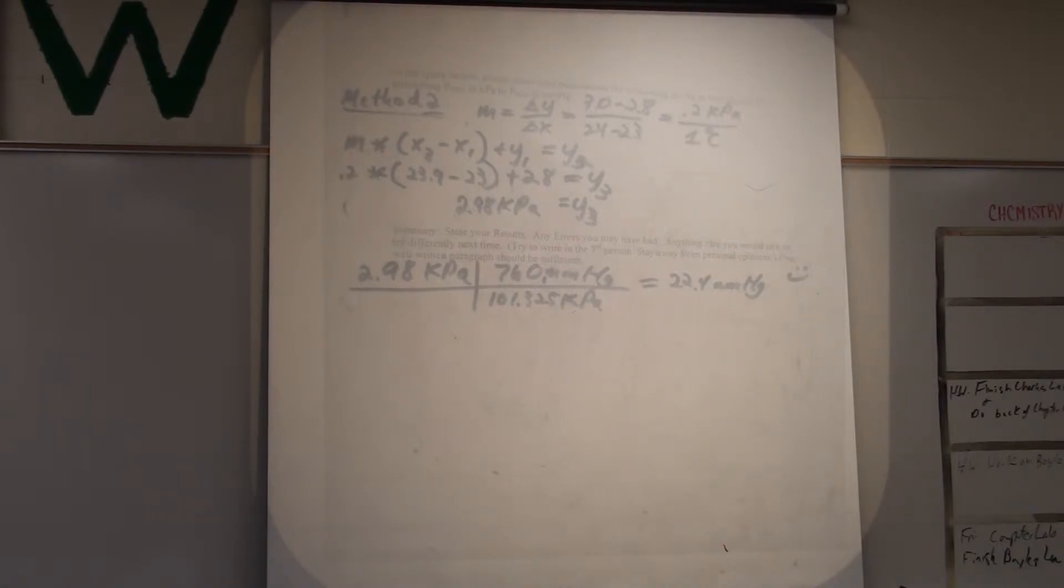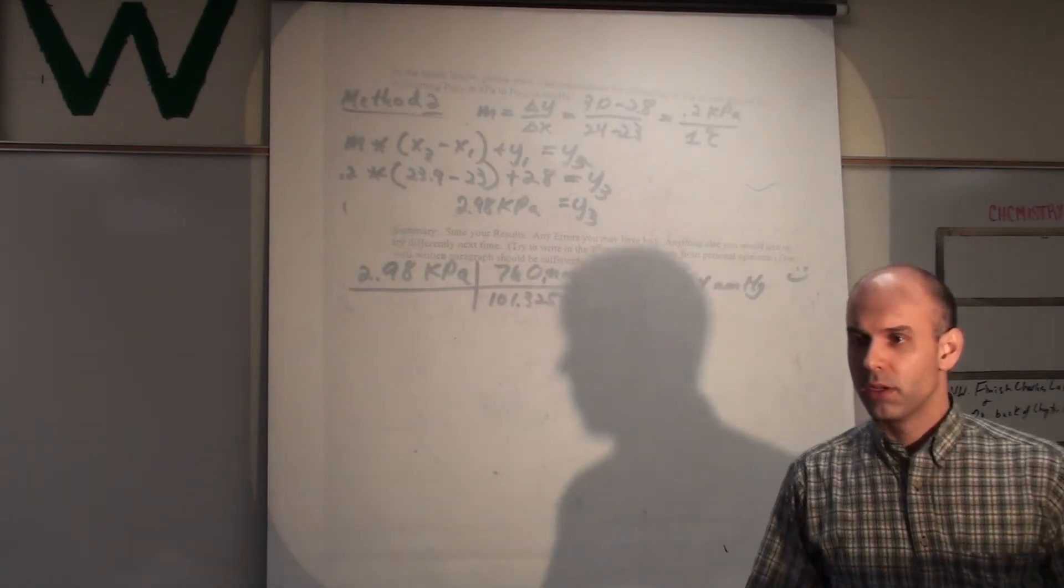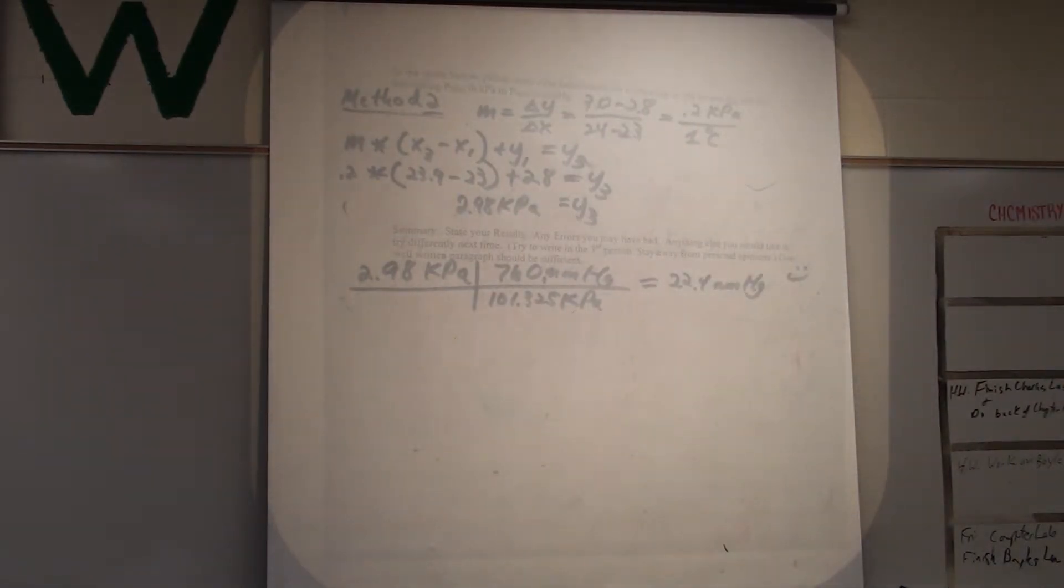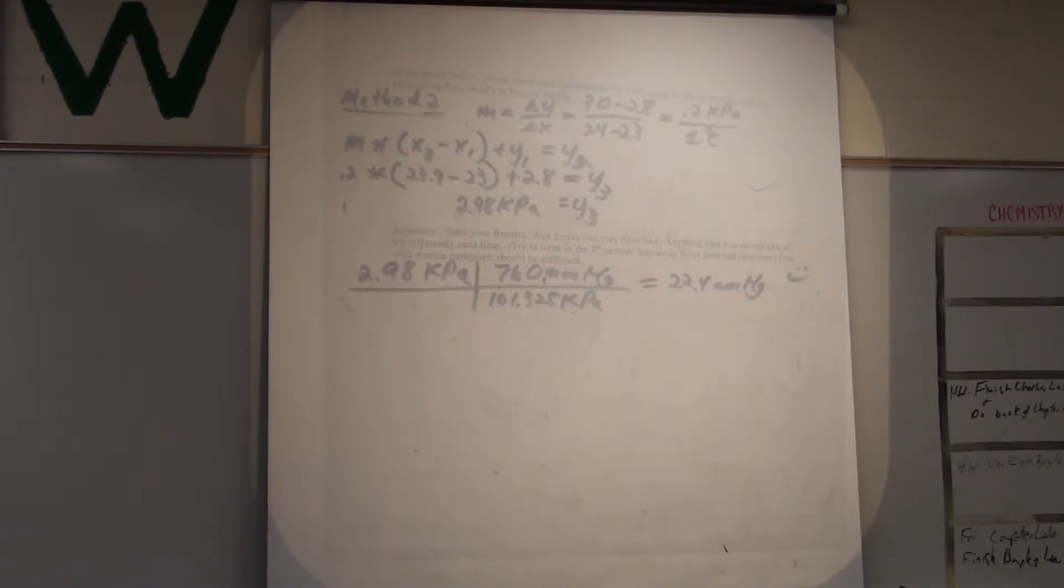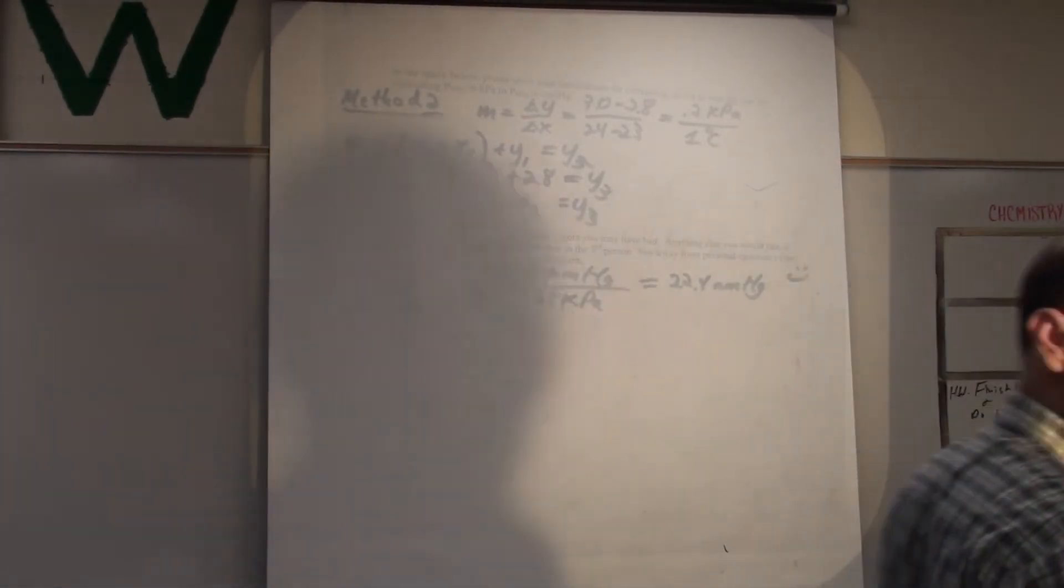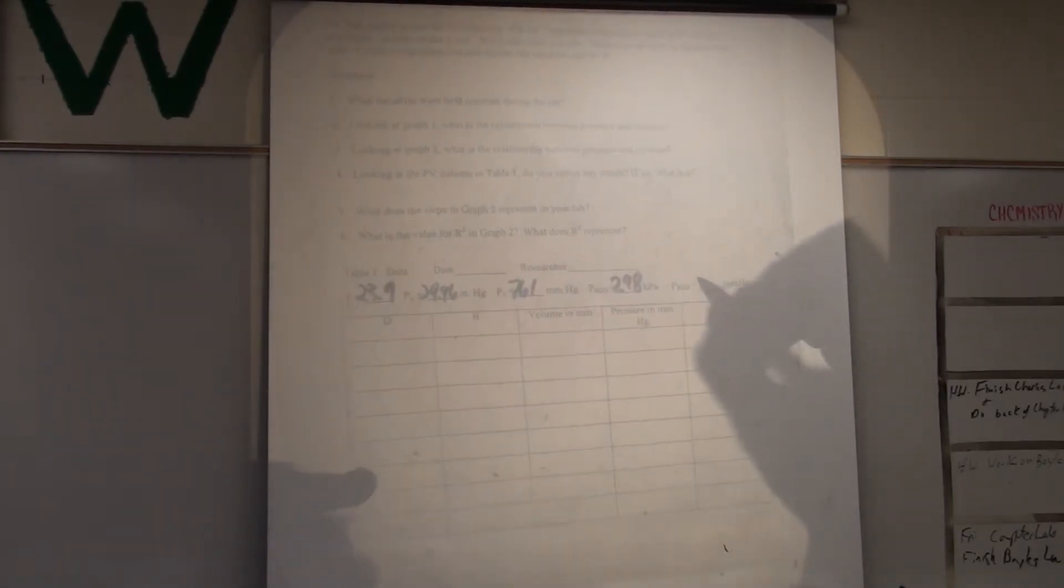Where'd you get the 101.325? That's just a conversion factor between millimeters of mercury and kPa from appendix K or O. If you have a question, let me know. So then you just go right directly to your table. Let's plug it into our table over here. Vapor pressure was 2.98. We converted it to millimeters of mercury, 22.4.